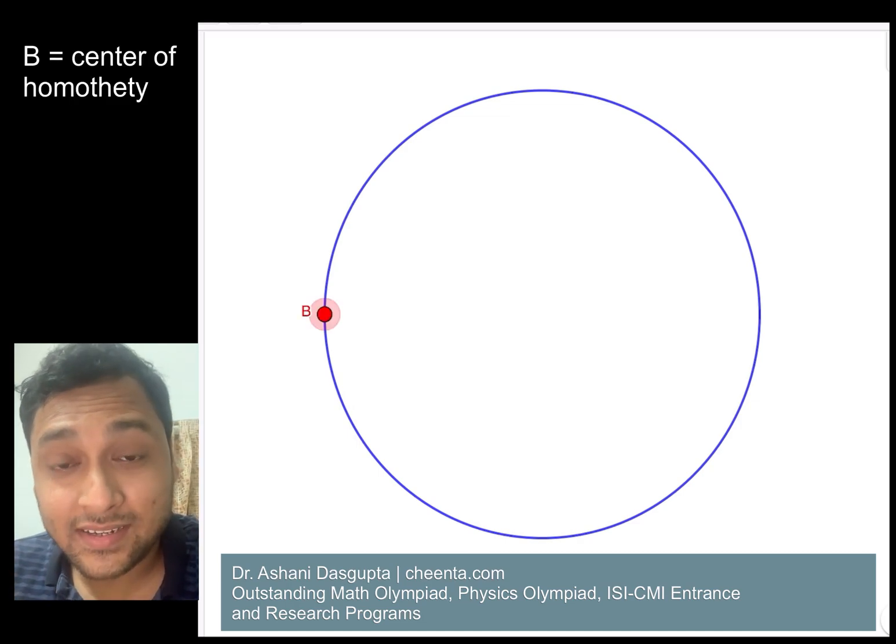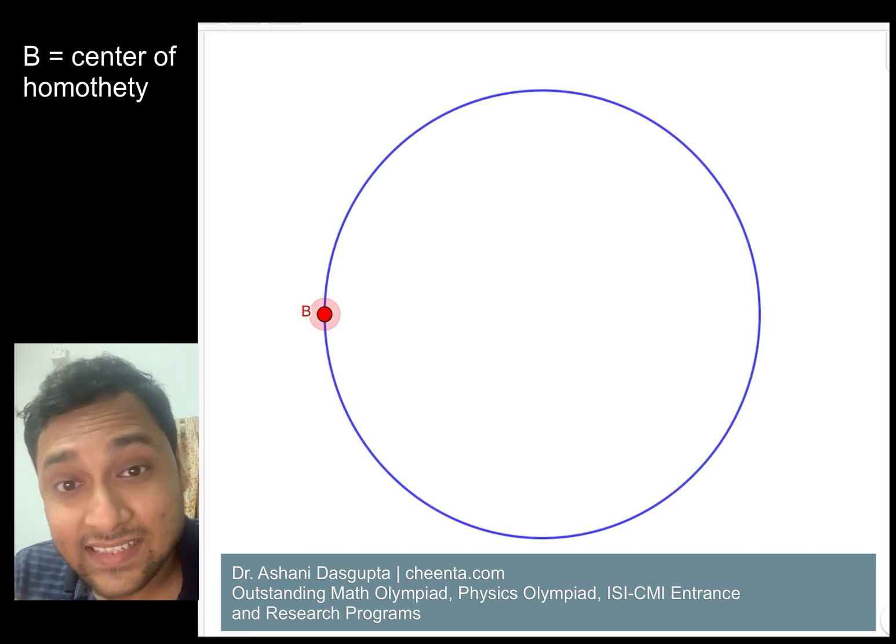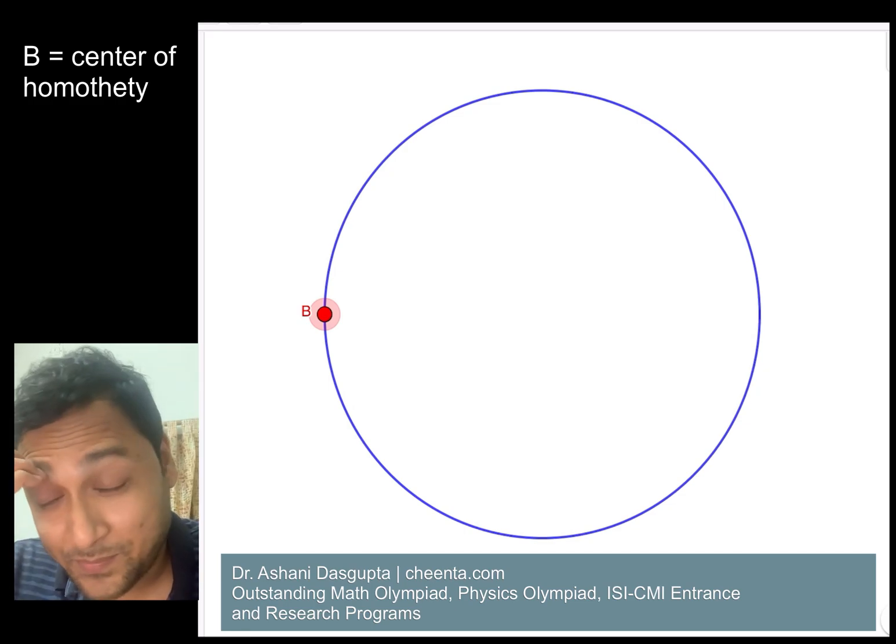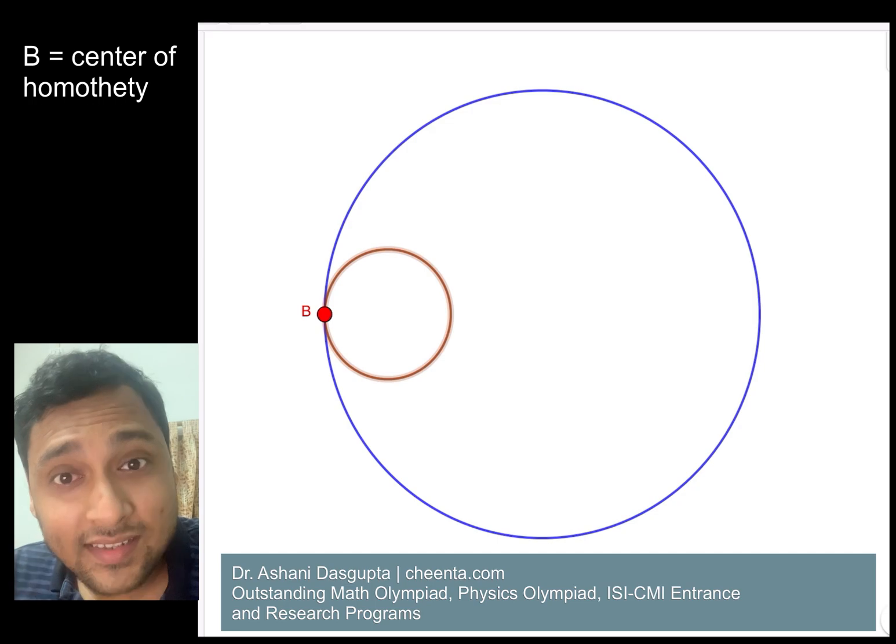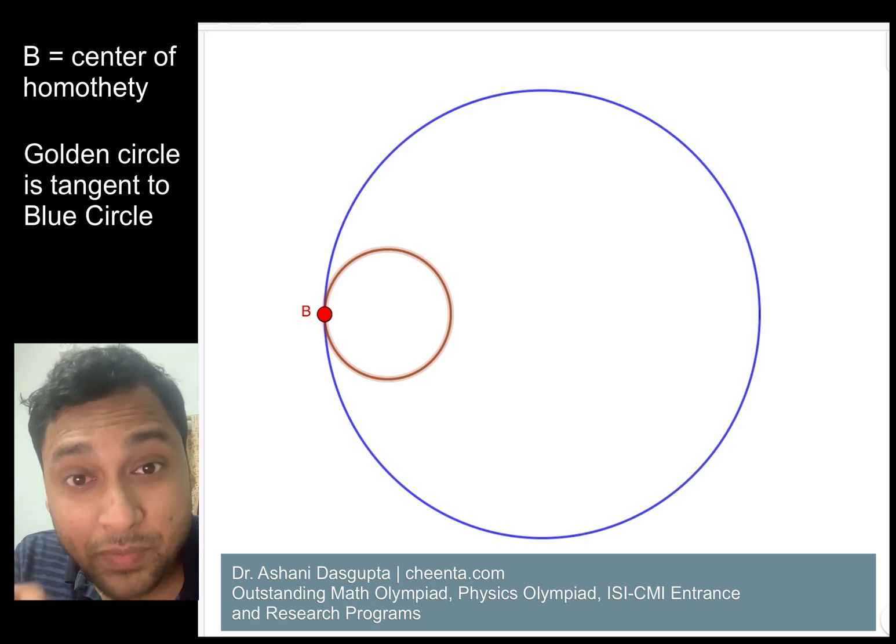Okay, so let's draw another circle. This is a golden circle that passes through B and it's tangent to the blue circle.